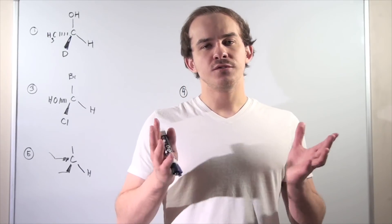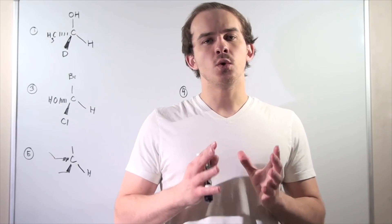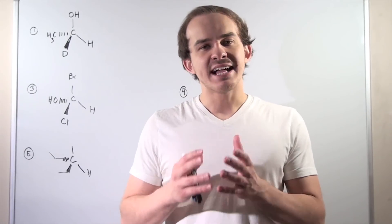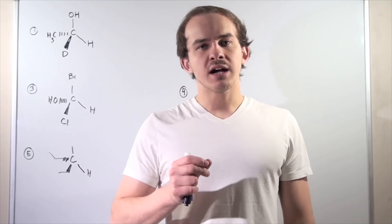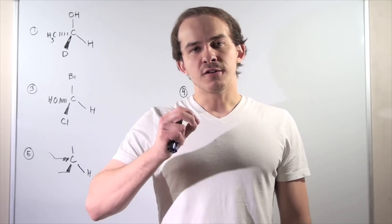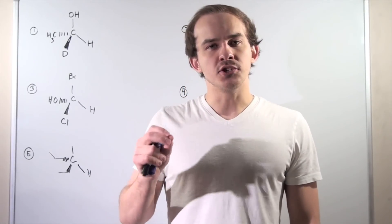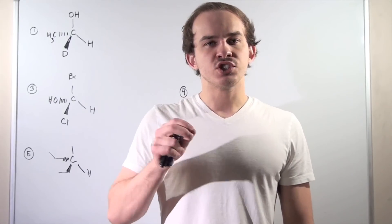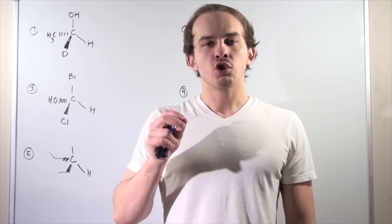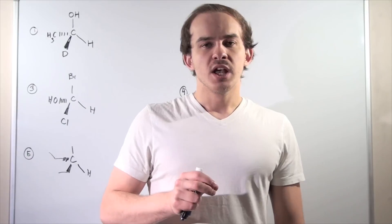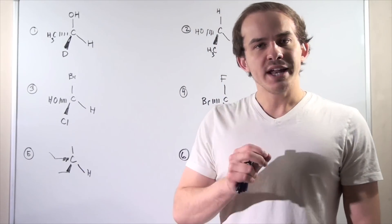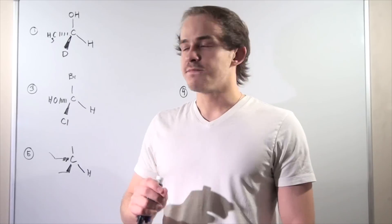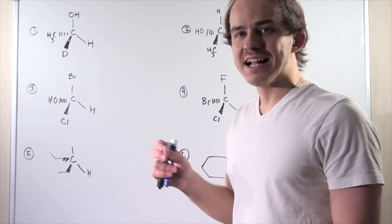In this lecture, we're going to do a few more examples in which we determine the absolute configuration of our enantiomers using the Cahn-Ingold-Prelog priority system. Our first job is to find the stereogenic carbon and then label the four different groups attached to it — one through four — one having the highest priority and four having the lowest priority. Let's begin with enantiomer one.